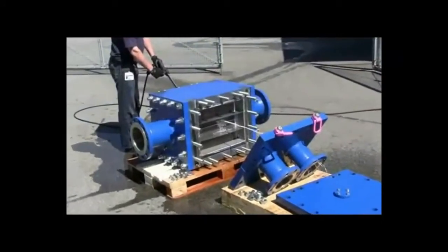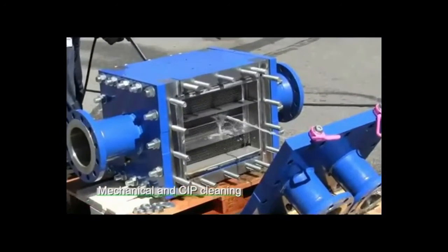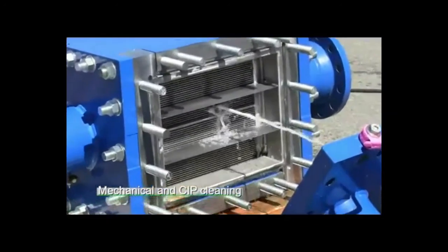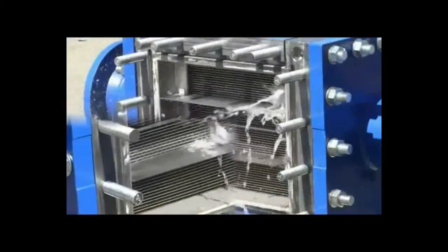The tube side is cleaned mechanically, for example using a high pressure jet, while the plate side is easily cleaned using CIP.